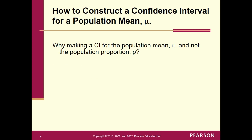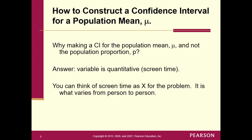Why are we making a confidence interval for the population mean mu and not the population proportion p? The reason is because the variable is quantitative. Screen time — think about it. Screen time is something where you answer with a number: how long are you on some sort of screen daily? Once your variable is quantitative, you change over to mu and working with means, versus a categorical variable where you would work with proportions and percentages.